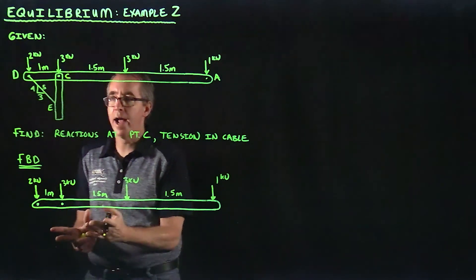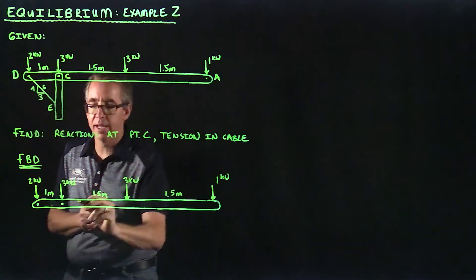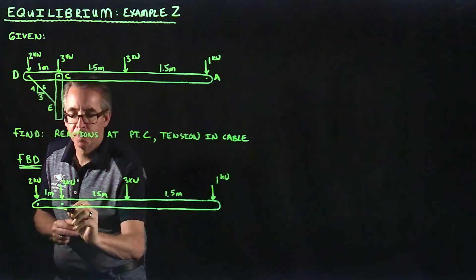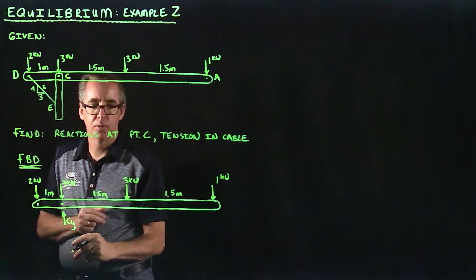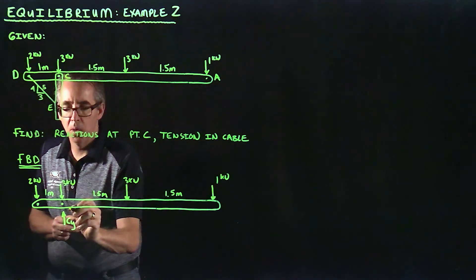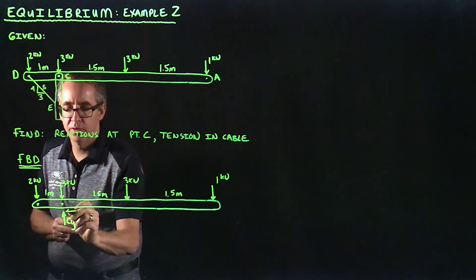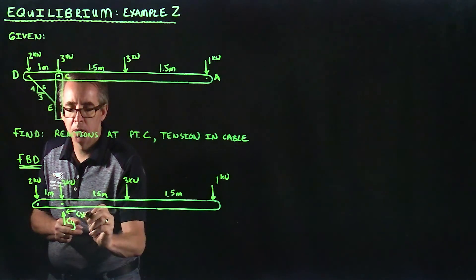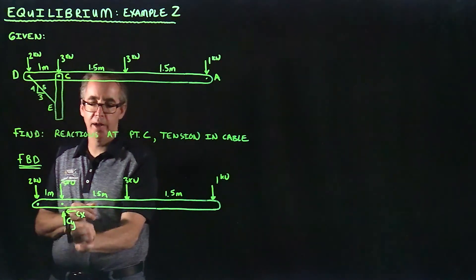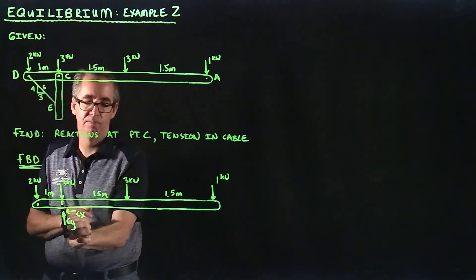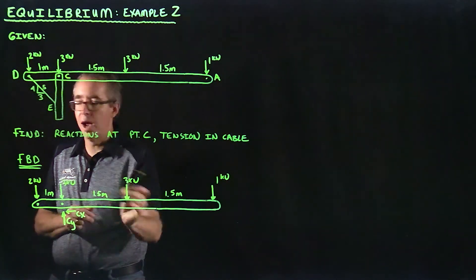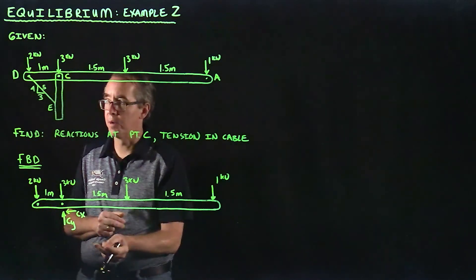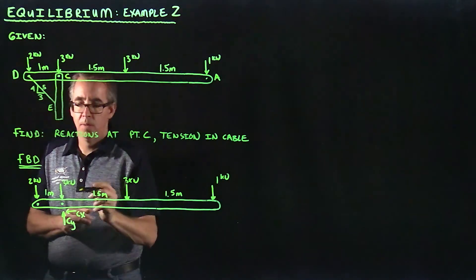Let's draw our reactions. We know at point C, I've got a pin. A pin implies a vertical and a horizontal reaction. I'm going to assume CY is positive, the vertical component of that reaction, and the horizontal component C sub X. I'm just assuming it's going to go to the left.